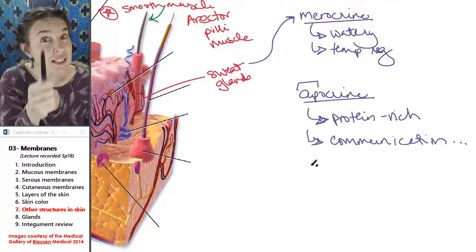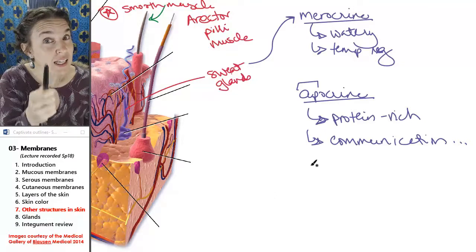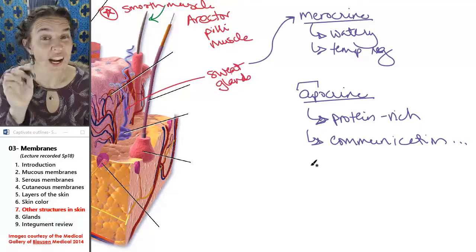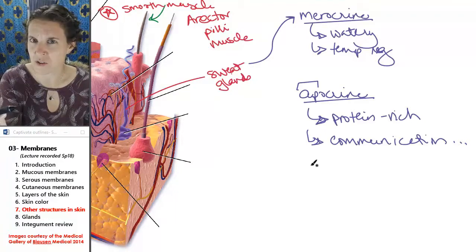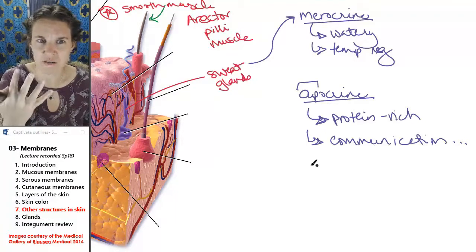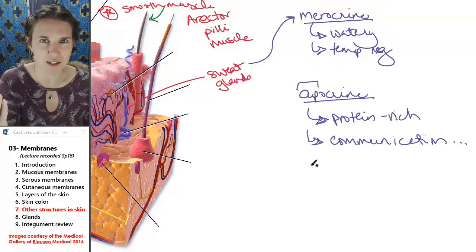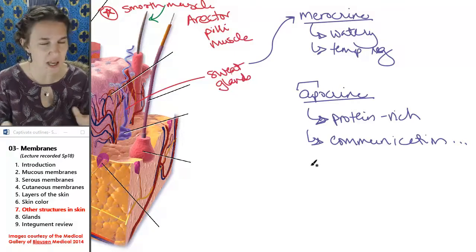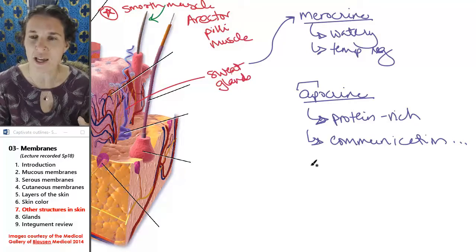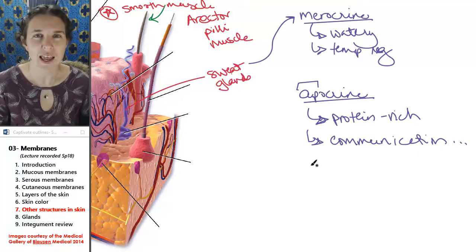Other places with apocrine sweat glands: your anus is covered and embedded with apocrine sweat glands, all your pubic region has apocrine sweat glands, and your nipples have apocrine sweat glands.